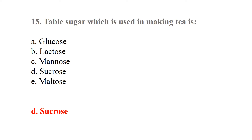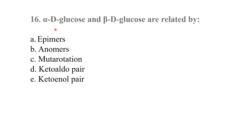The name of the table sugar is sucrose, found in cane. Alpha-D-glucose and beta-D-glucose are related as anomers — they are anomers due to differences at the anomeric carbon. A keto-enol pair relates to enol formation. The best answer is anomers.